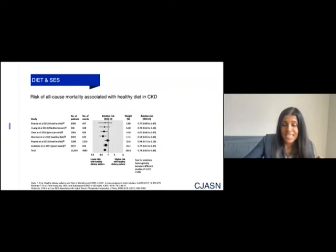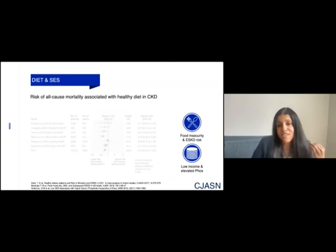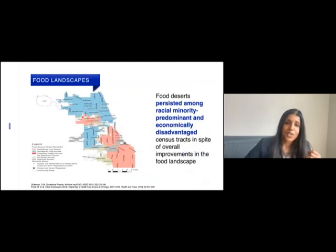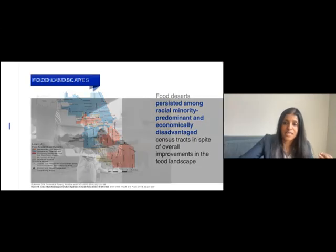Diet and access to healthy food has huge impact on chronic kidney disease. Food insecurity has been associated with end-stage kidney disease risk. Low income has been associated with poor outcomes including elevated phosphorus. Food deserts continue to persist in primarily racial minority and economically disadvantaged neighborhoods, such as historically redlined neighborhoods in Chicago.